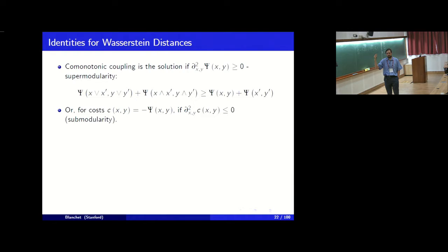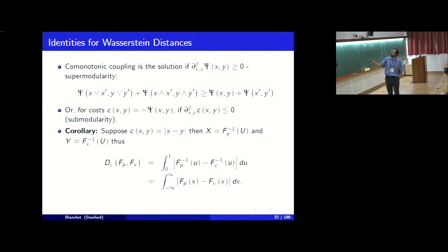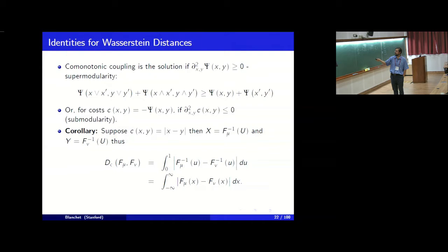Whenever the surplus function is super-modular—equivalently the cost function is sub-modular—the solution is always the co-monotonic coupling: sort and match. As a corollary, for cost functions like the p-th power of the distance, all of these are sub-modular, and the optimal coupling is the same. In one dimension this gives the well-known formula for the Wasserstein distance: the p-th moment of the difference of the two inverse CDFs evaluated at the same uniform random variable. If you look up Wasserstein distance in one dimension on Wikipedia, you see exactly this formula.